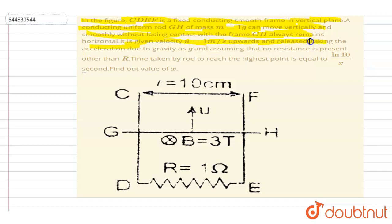in upward direction and released, taking the acceleration due to gravity as g, assuming no resistance is present other than R. Time taken by the rod to reach the highest point is ln(10) by x second. We want this value of x.